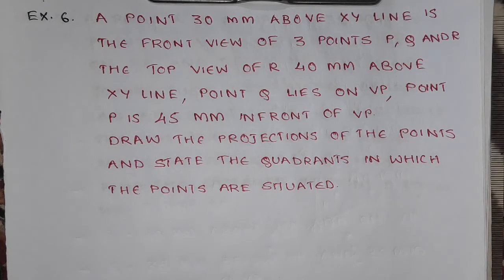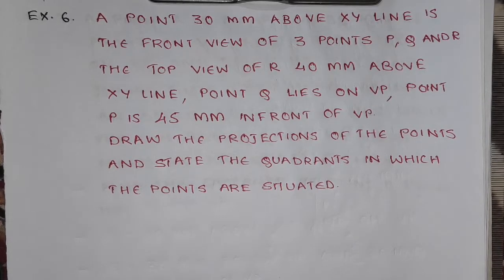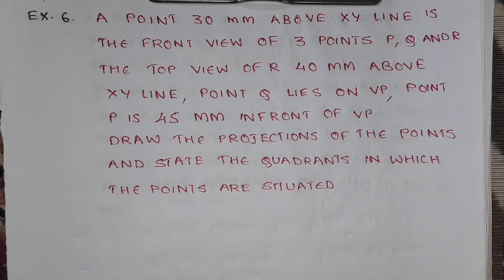Here is the next problem. A point 30 mm above the XY line is the front view of three points P, Q, and R. The top view of R is 40 mm above the XY line. Point Q lies on VP. Point P is 45 mm in front of VP. Draw the projections of the points and state the quadrants in which the points are situated. This is one of the very important and confusing type of problems where students tend to get confused by the wording and make mistakes. Today we shall clearly see how to solve this problem and avoid such mistakes.